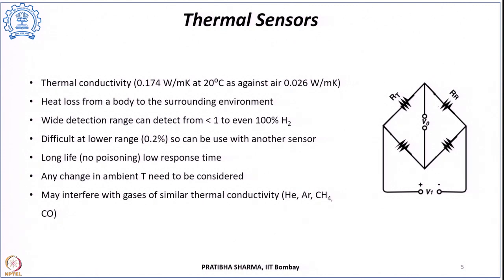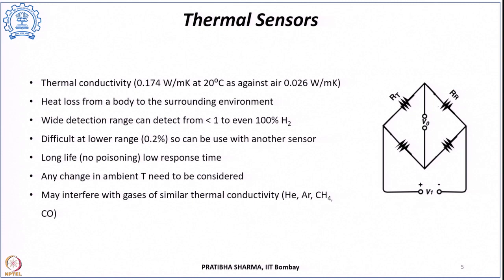These thermal conductivity-based sensors have a wide detection range — from less than 1% to even 100% hydrogen. However, they cannot detect below 0.2%, so another sensor must be used alongside for lower concentrations. Since these sensors are not poisoned by hydrogen or other gases, their operational life is long — more than 5 years — and response time can be as low as 5 seconds.